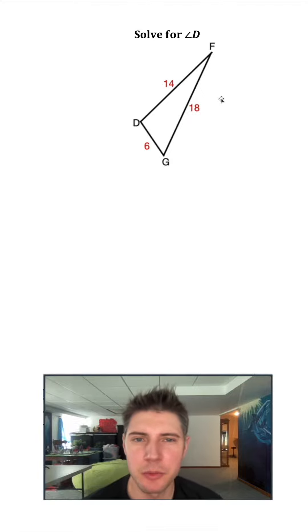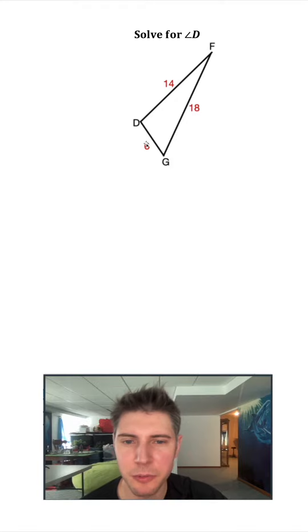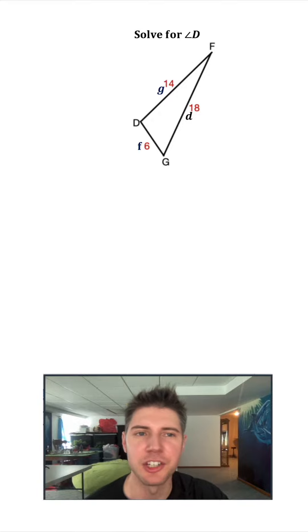The easiest way to solve this would be using law of cosines. Before we start, let's name our sides. So opposite the angle F, we want to put a lowercase f. Opposite our capital D, we want to put a lowercase d. And then opposite our capital G is a lowercase g. This just makes it way easier to work with instead of calling them FD, DG, and GF.